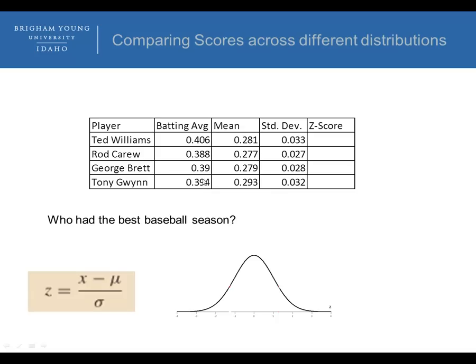We can take these different baseball players in different eras and actually compare those z-scores because we have the mean batting averages for those years as well as the standard deviation. So we can get the z-scores to say relative to the given season who had a more extreme or unusual value. So if you want to stop the video, calculate the z-scores, and then compare the results.